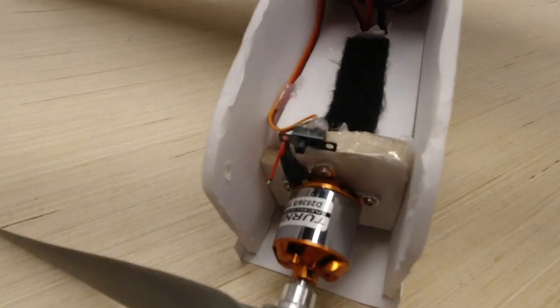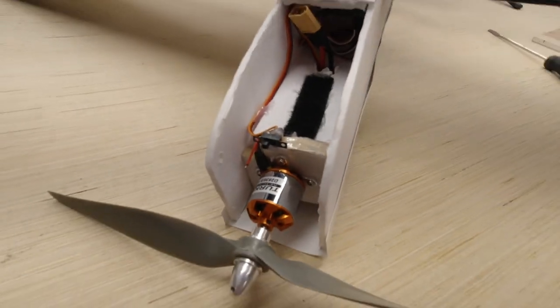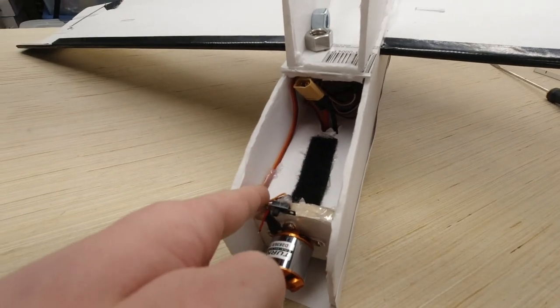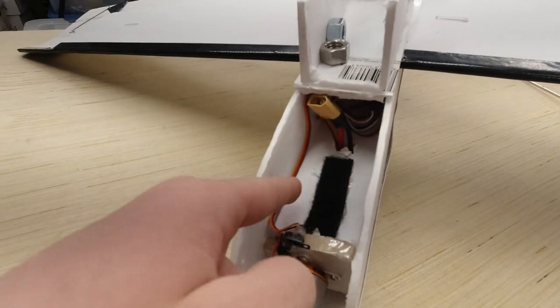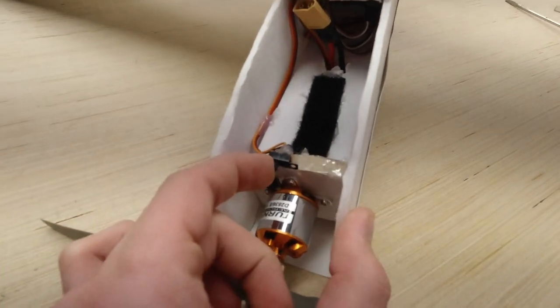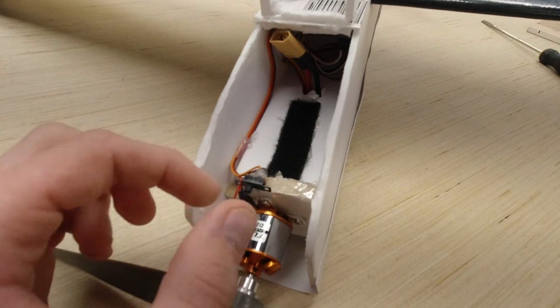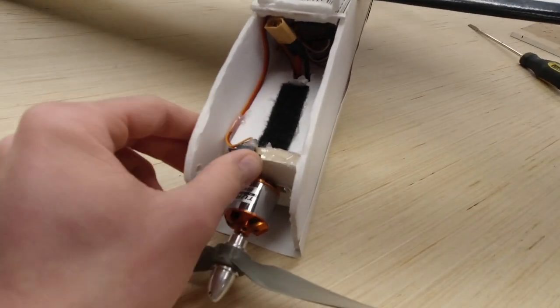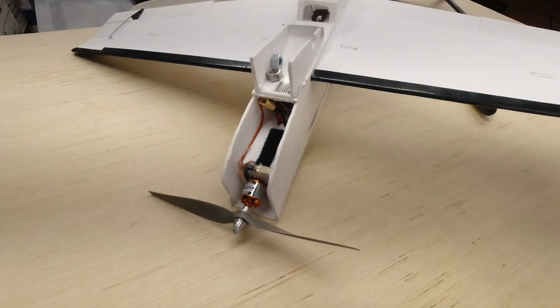Alright guys, so I finished up mounting the bind plug switch system right here. It just goes back from the receiver along this side. Hot glued in place so it doesn't get in the way of my battery mount. And then as you can see it's just mounted right here on the firewall. Easy to get to with my fingers. Just hot glued it down and it's got bind mode off, bind mode on. Simple as that. And I'm really happy with this result.